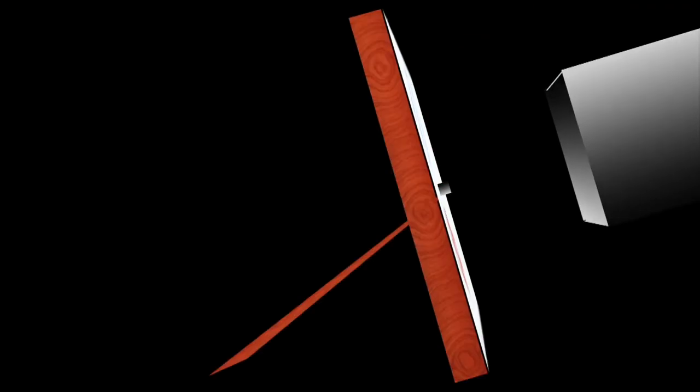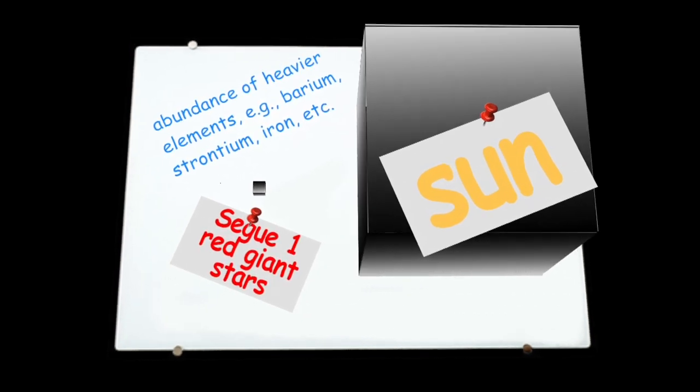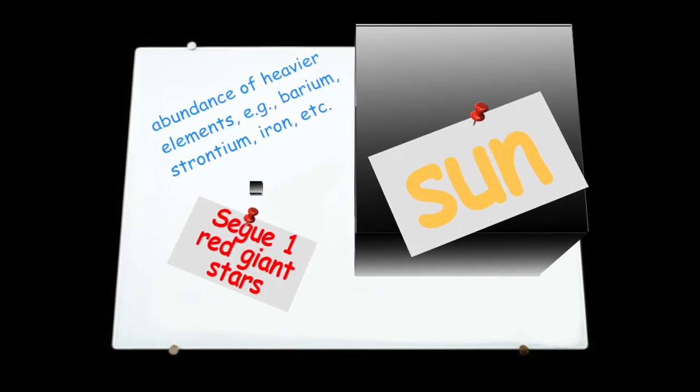Three of the seven red giant stars in Segue 1 are bright enough for scientists to measure the abundance of each chemical element. These red giants have heavy element abundances like barium, strontium, and iron more than 3,000 times lower than that of the Sun.